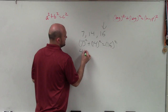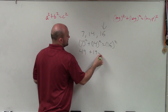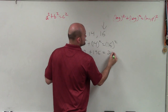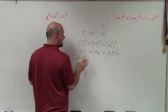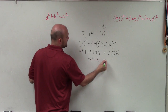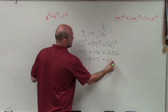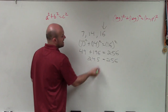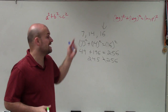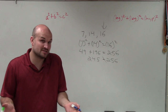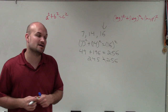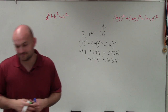So we have 49 plus 196 equals 256. Combining those two terms gives us 245 equals 256. Since that is not true, we know that these sides do produce the sides of a triangle, but they're not going to produce the sides of a right triangle. Thanks.